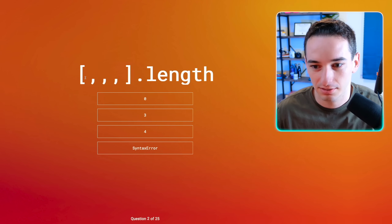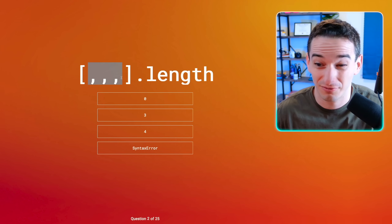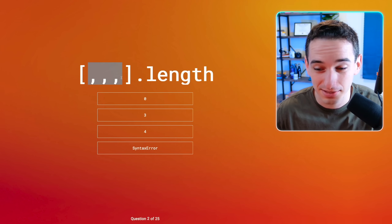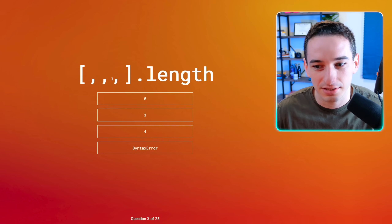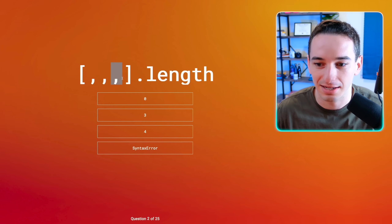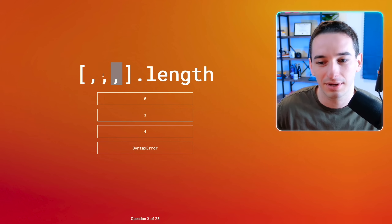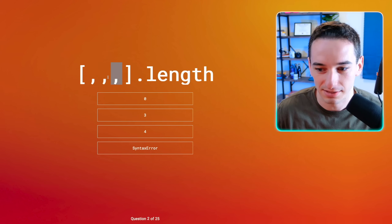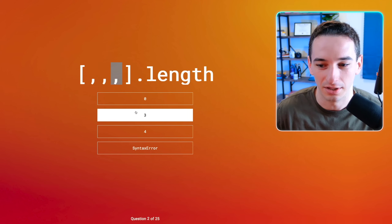Array with some commas dot length. So this is going to create empty spaces. We have one, two, three, four empty spaces, although it might actually treat the last comma as a trailing comma. So that would mean we'd have three spaces. I'm going to go with three — I think the last comma is a trailing comma.